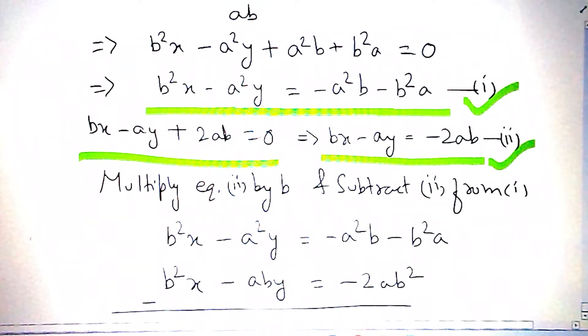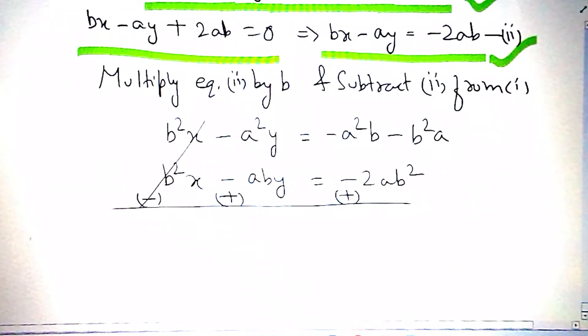Sign will get changed. Now, b²x minus b²x will get cancelled. Then we have aby - a²y = 2ab² - a²b - b²a.